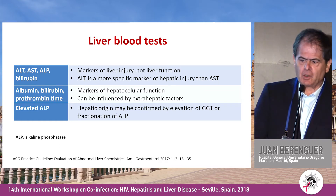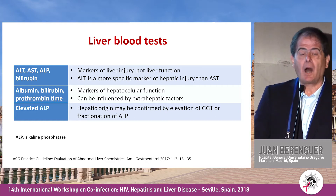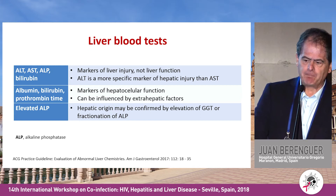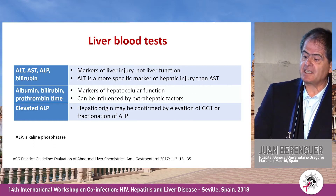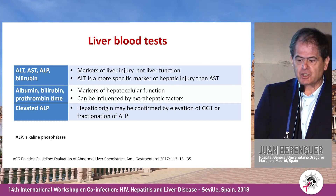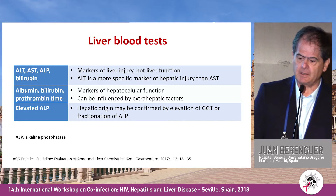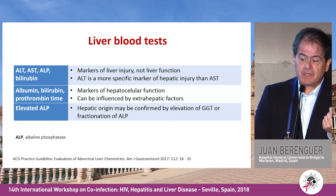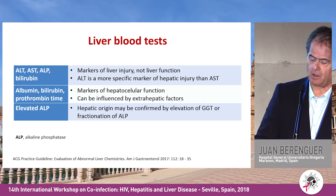Addressing the topic of the talk — liver blood tests — just to remind you that transaminase, alkaline phosphatase, and bilirubin are markers of liver injury, not liver function, although bilirubin is also a marker of liver function. ALT is a more specific marker of hepatic injury than AST. Albumin, bilirubin, and prothrombin time are markers of hepatocellular function, but they can be influenced by extrahepatic factors such as malnutrition. Elevated alkaline phosphatase in isolation can be confirmed as hepatic in origin by elevation of GGT or by fractionation of alkaline phosphatase.